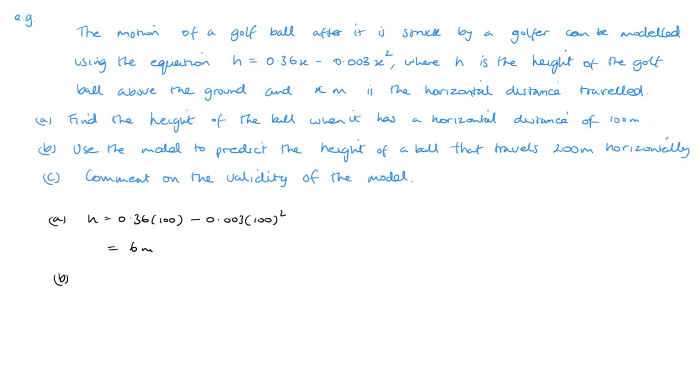Now let's look at part B. Use the model to predict the height of the ball that travels 200 meters. So this time we are putting in 200 meters and this time we get negative 48 meters, which is obviously impossible.